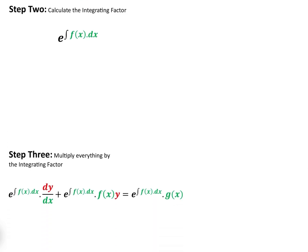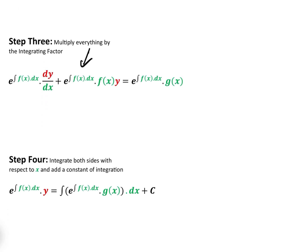In step three, we then multiply by whatever that integrating factor is, and we get this rather horrific looking equation here. But then in step four, when we integrate both sides,